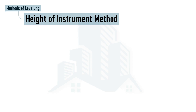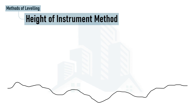To understand the height of instrument method, let's create a scenario on field. This is the cross-section of the land and we want to determine the reduced level of different points on this land surface. To start the leveling process, we should know a point where the reduced level is known — that is the benchmark.